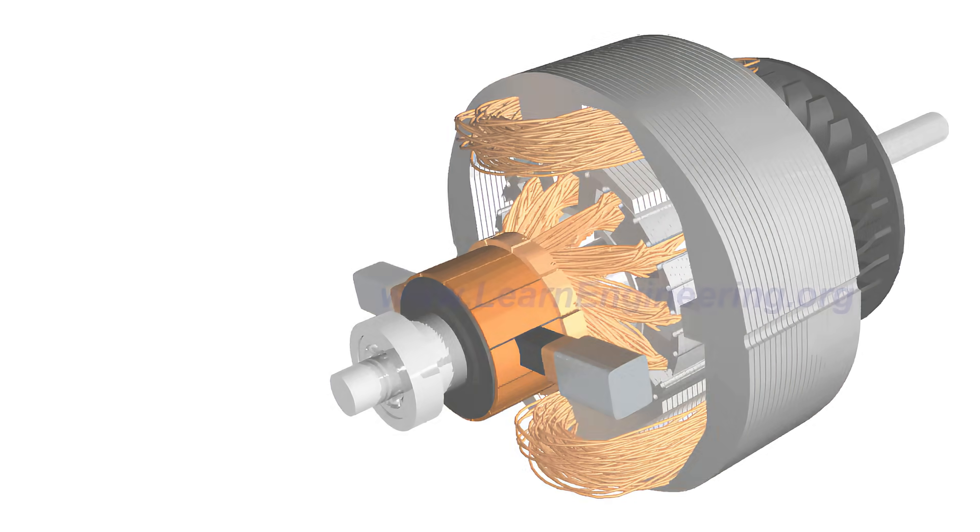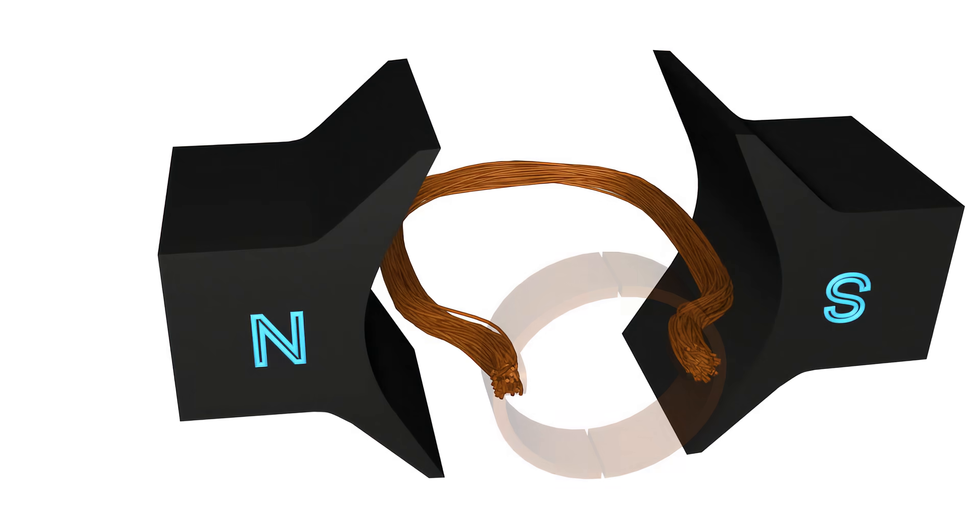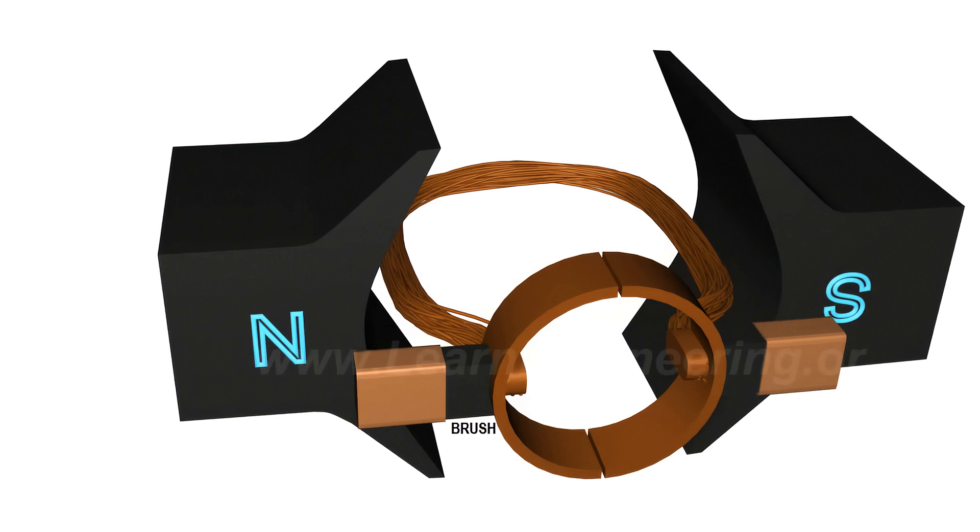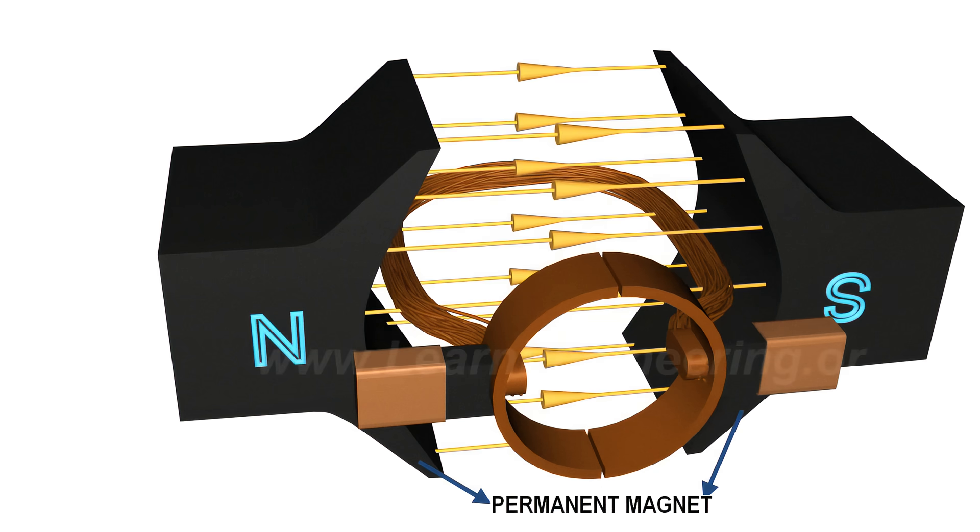Let's first start with the simplest DC motor possible. It looks like this. The stator provides a constant magnetic field, and the armature, which is the rotating part, is a simple coil.